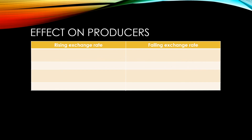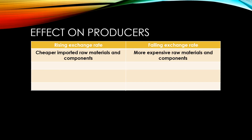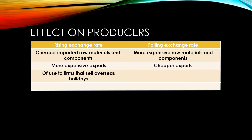When it comes to producers, those that get some of their raw materials and components from abroad will face issues based on rising or falling exchange rates. A rising exchange rate will mean cheaper imported raw materials and components, while a falling exchange rate will mean more expensive raw materials and components. For producers that export their goods and services to foreign markets, a rising exchange rate means more expensive exports and probably fewer sales, whereas a falling exchange rate means cheaper exports and more sales. As exchange rates rise, firms that sell overseas holidays will benefit from increased demand as the overall cost of these holidays goes down. When we see a falling exchange rate, firms that are part of the UK hospitality and tourism sector might see a bonus as more people from overseas are willing to come and travel to the UK as it's cheaper.